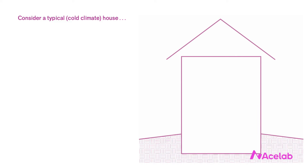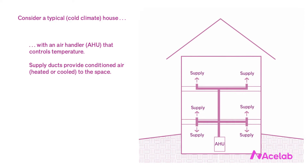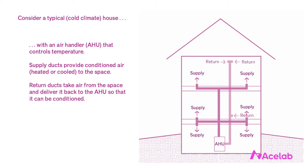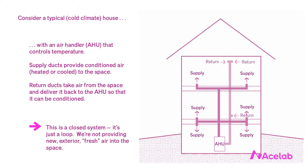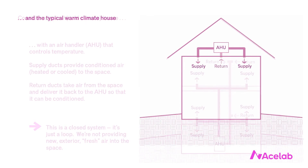Let's take a look at a typical cold climate house with a basement and two stories above grade. It has an air handler that controls temperature. Supply ducts provide conditioned air — either heated or cooled — to the space inside, and return ducts take air from the space and deliver it back to the air handler so that it can be conditioned. What we have is a closed system — just a loop. We're not providing new exterior fresh air into the space; we're just heating or cooling what's already there.